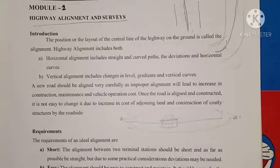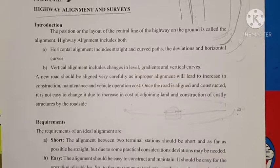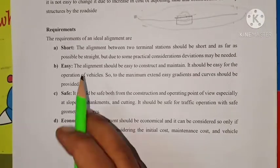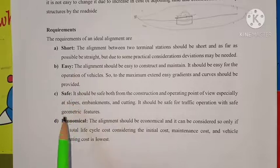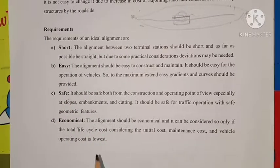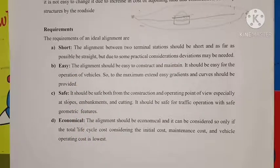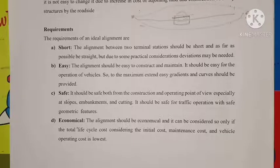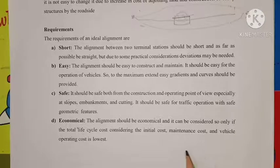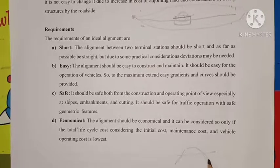The four requirements of highway alignment are: short, easy, safe, and economical. The alignment connecting the two terminal stations should be short. It should also be easy — meaning the gradient should be less rather than steep, and horizontal curves should be minimized.